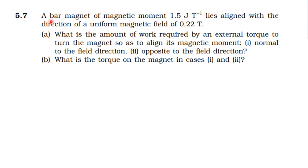Magnetism and matter-topic learning. Exercise 5.7. A bar magnet of magnetic moment 1.5 joule per tesla lies aligned with the direction of uniform magnetic field of 0.22 tesla.